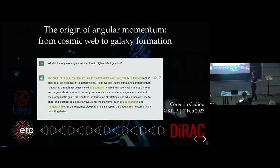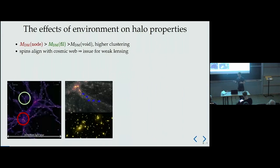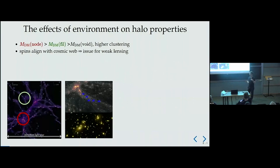I want to broadly separate the different effects that the environment can have on dark matter halo properties and galaxies. The first is that higher mass dark matter halos show higher clustering — essentially density effects. More subtly, galaxies nearby tend to align with one another, and their spins tend to align or be perpendicular to the local filament structure. That's another kind of environmental effect.